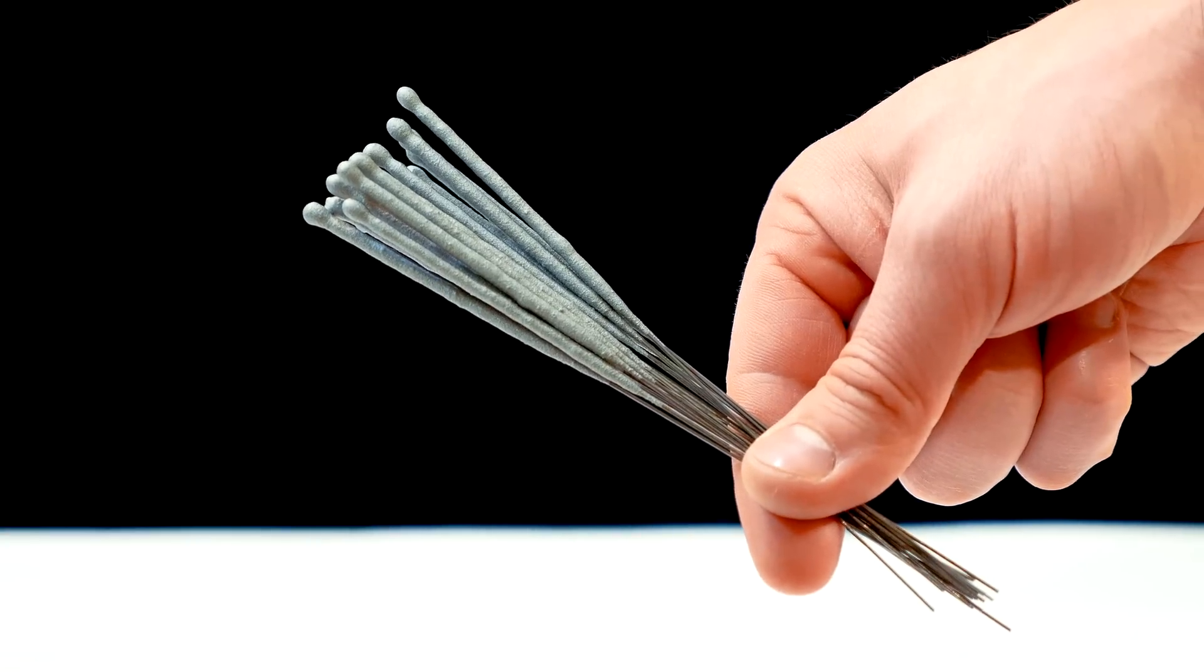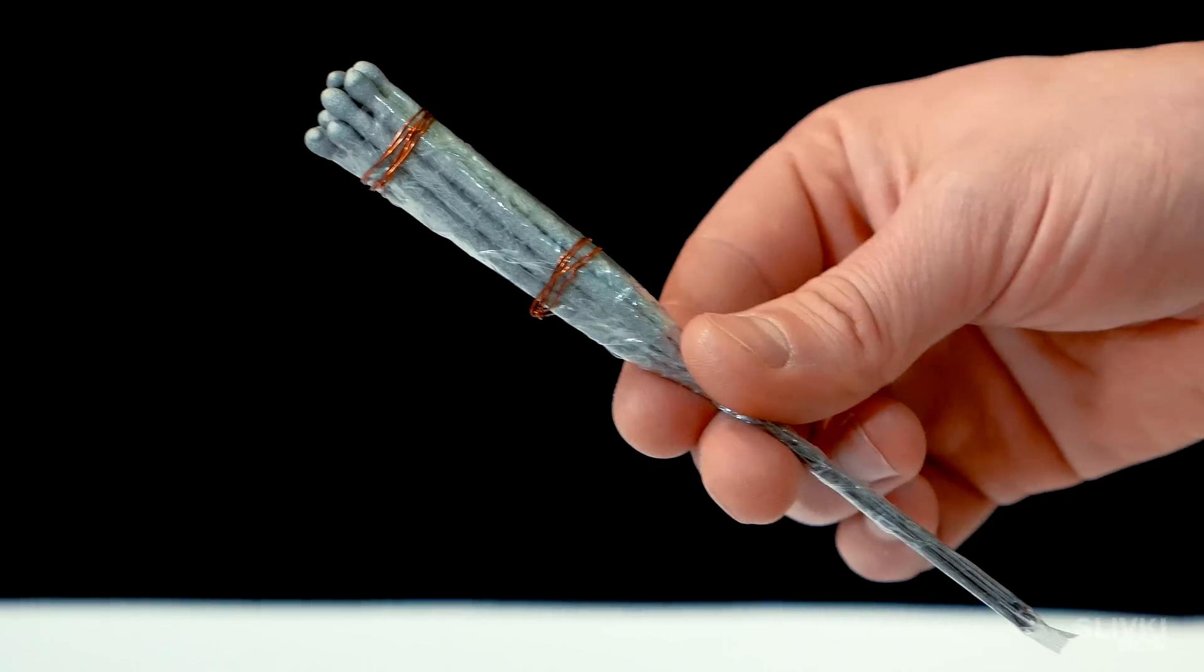We decided to verify how a bengal light is going to fire underwater. Wind it with scotch, fasten it with wire and begin to dip down.